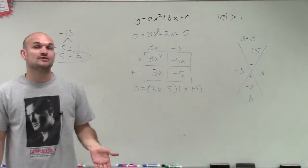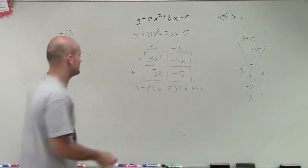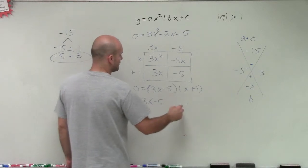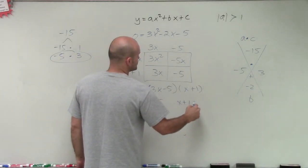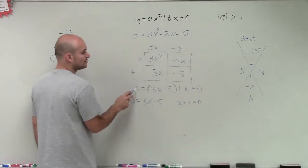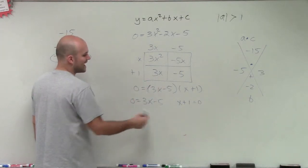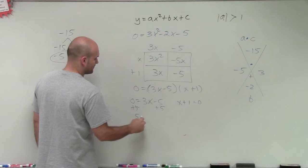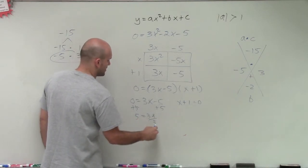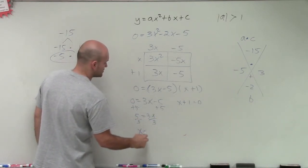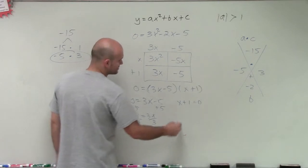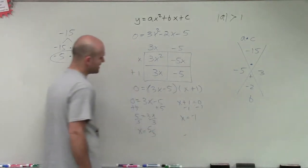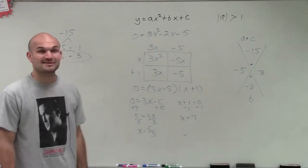Now that I've rewritten it in factored form, I can apply the zero product property. The zero product property allows me to set each factor equal to 0, because since they multiply to equal 0, one of them must equal 0. So I solve each one: for 3x minus 5 equals 0, I divide both sides by 3. Therefore my solutions or x-intercepts are x equals 5 thirds or x equals negative 1.